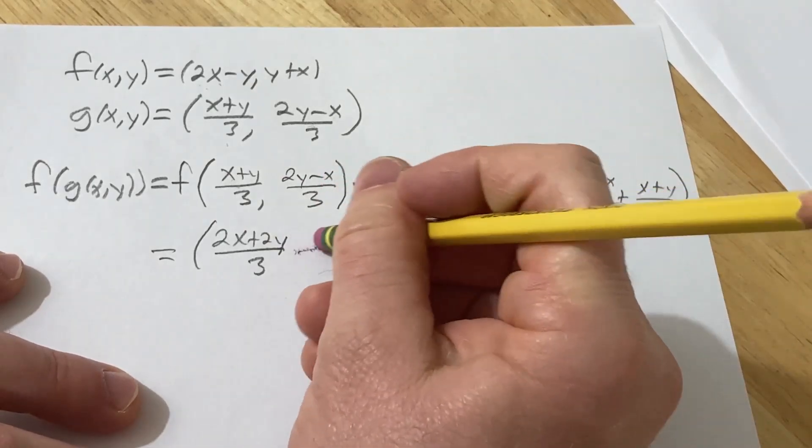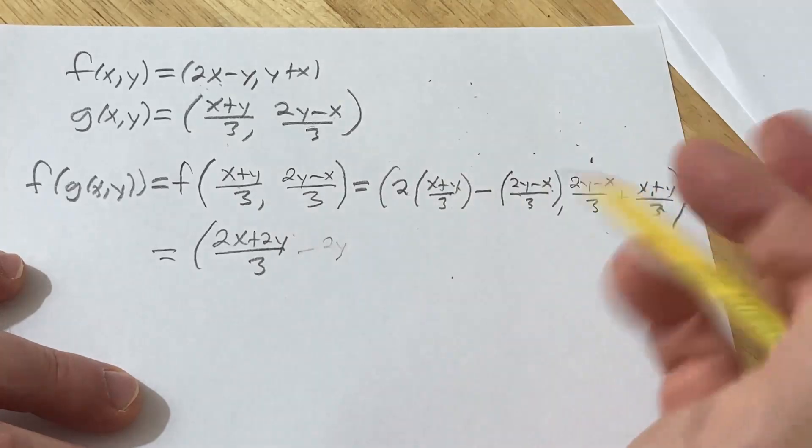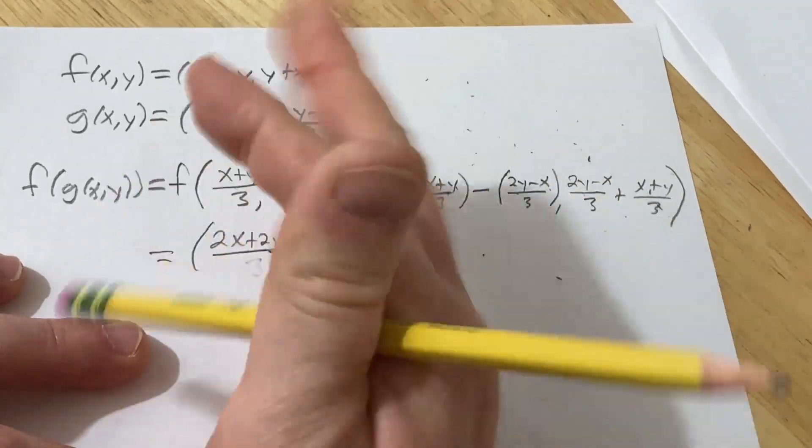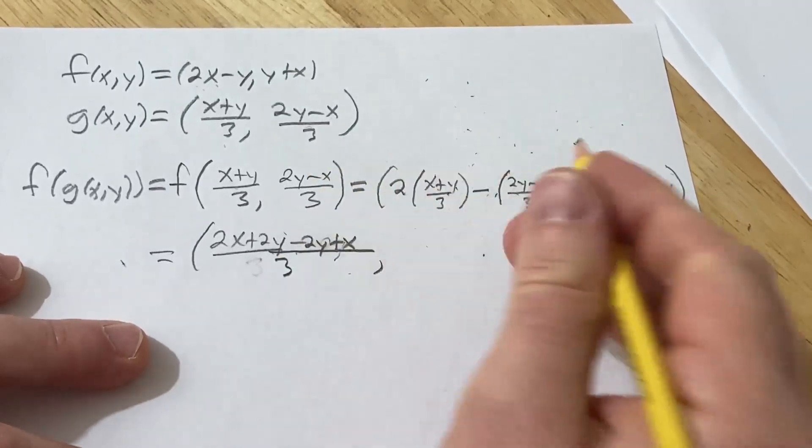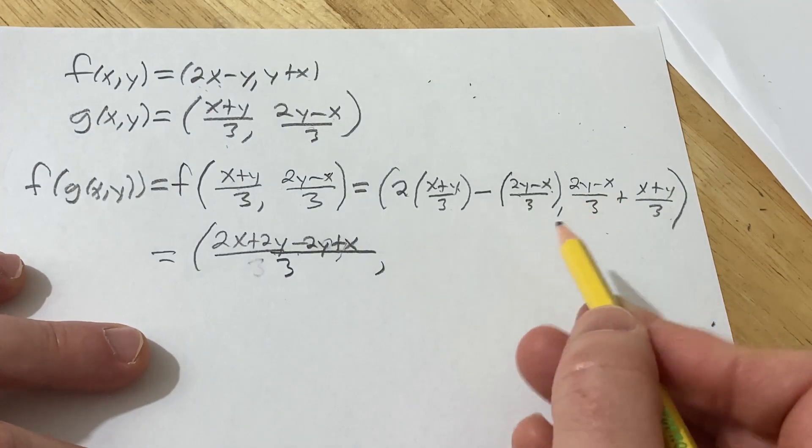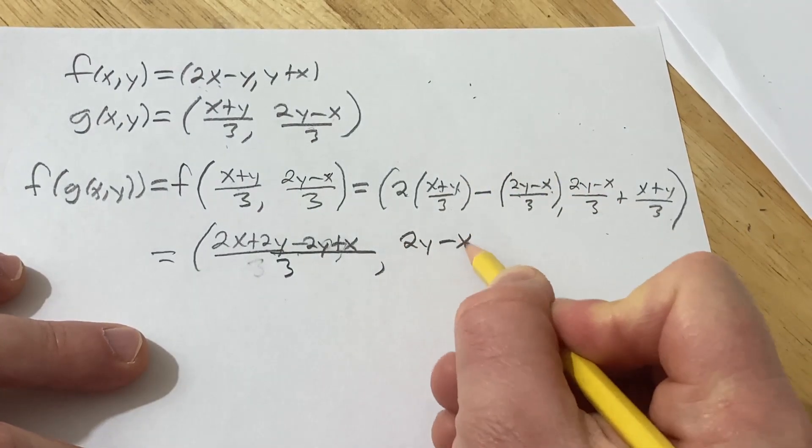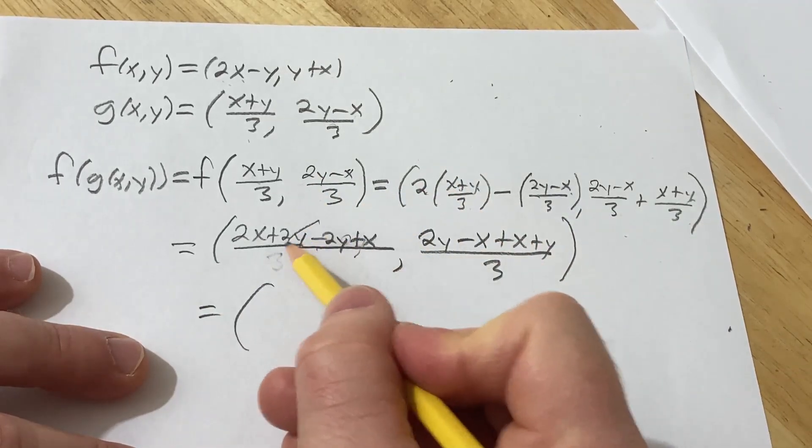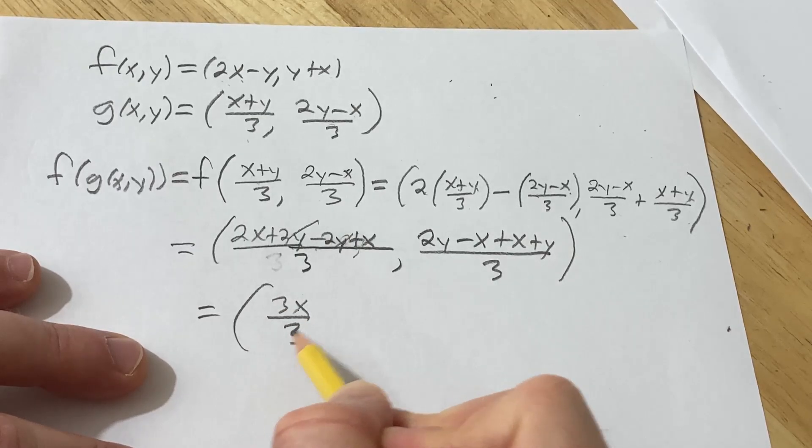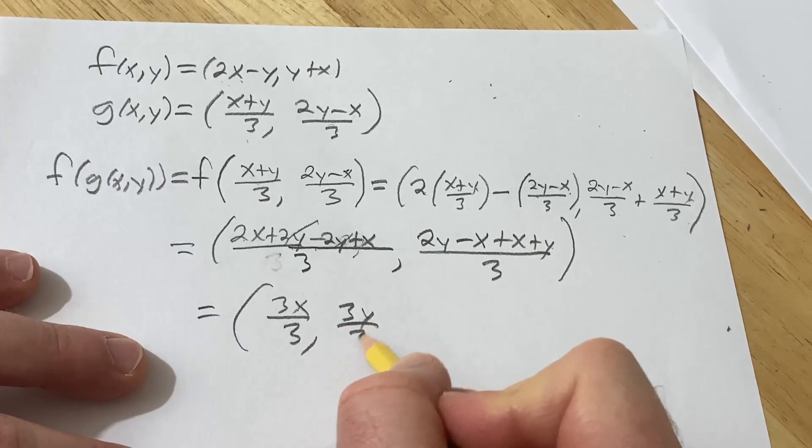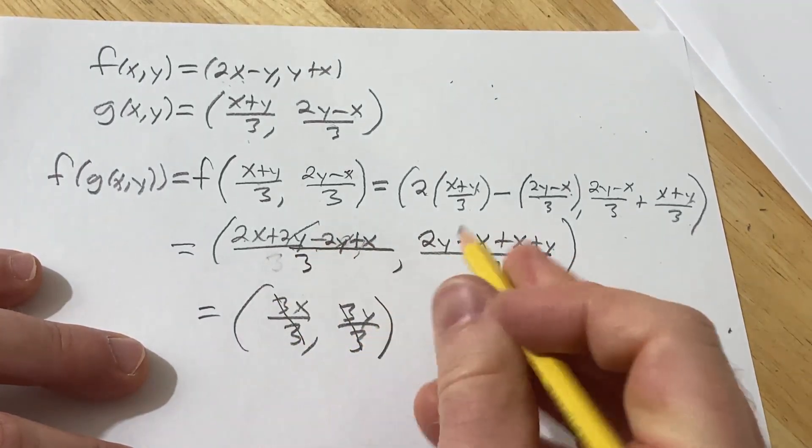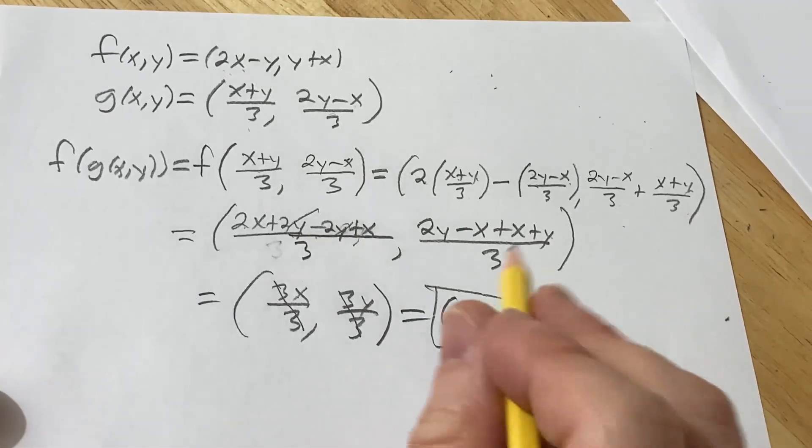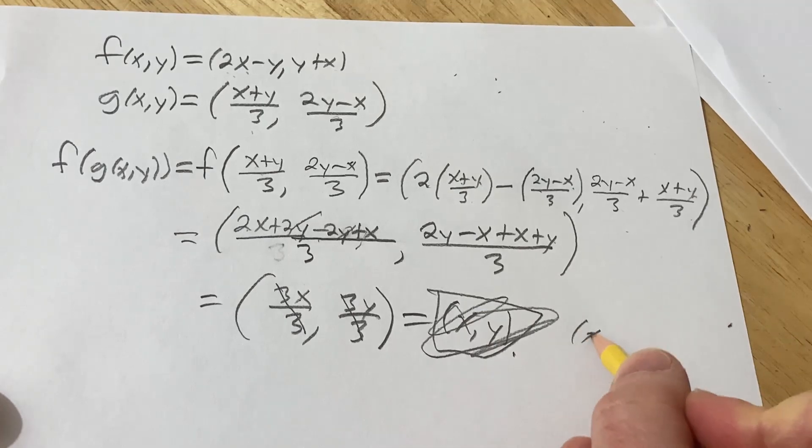And then over here, same thing, it's all over 3. So it'll be (2y - x + x + y)/3, right? Plus (x + y)/3. And then these cancel, so we get 2x + x. So 3x. Beautiful. And then 3y over 3. I love the sound of the pencil. Look at that. Wonderful. I don't know why I put it in a box. I'm just getting excited. So yeah, it doesn't need to be in a box. I don't know why I did that. But that's equal to (x,y). And this is for all (x,y).